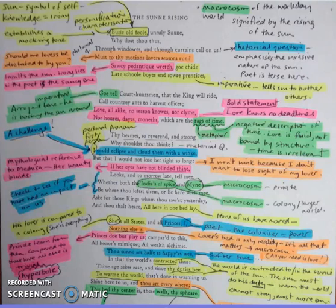And he begins the poem with quite an accusatory tone, but it's a mocking tone as well, where he's castigating the sun for peeking through the window, and disturbing his moment of romance, I suppose, with his love.